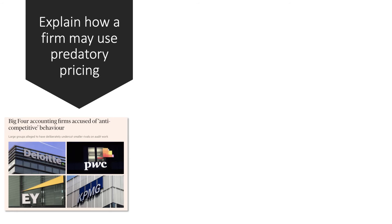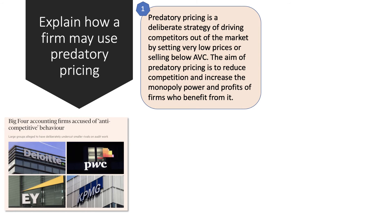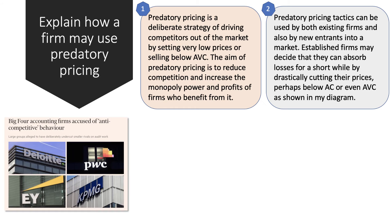Predatory pricing is different to limit pricing. Essentially it's the act of selling a good or service below cost to force a rival out of the market. The big four accountancy firms have been accused of predatory pricing in recent times. The key point is that predatory pricing is a deliberate strategy — the aim is to drive one or more firms out of the market by setting low prices, perhaps even pricing below your own variable cost.